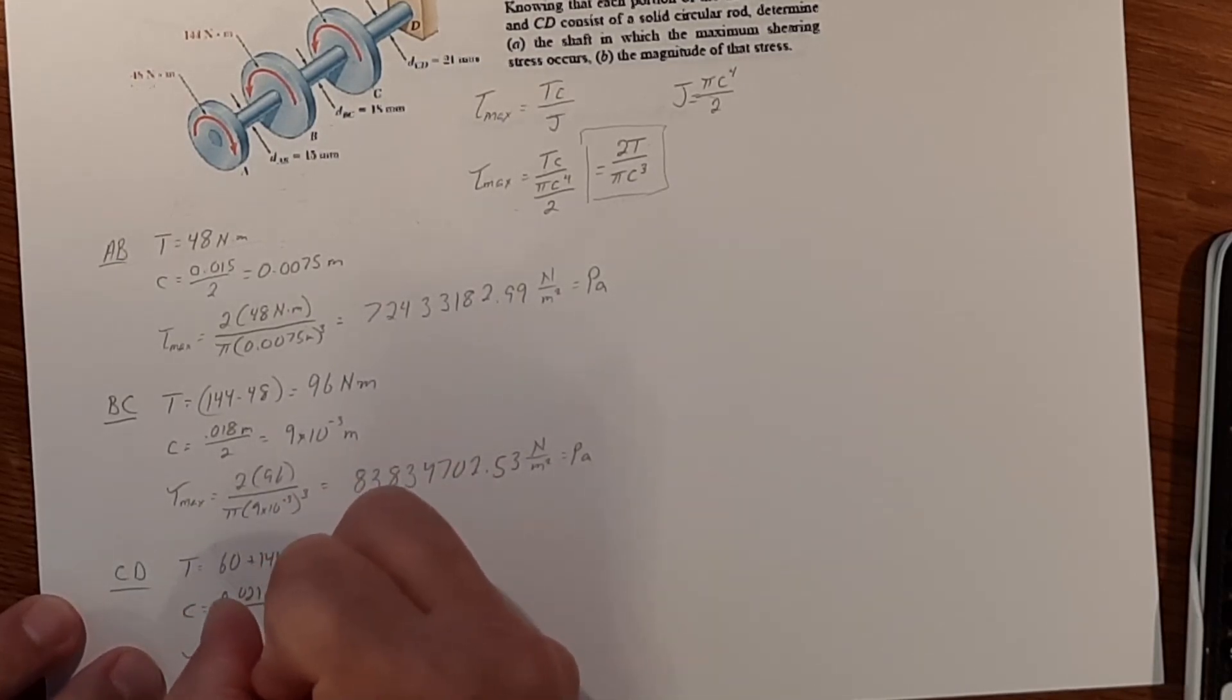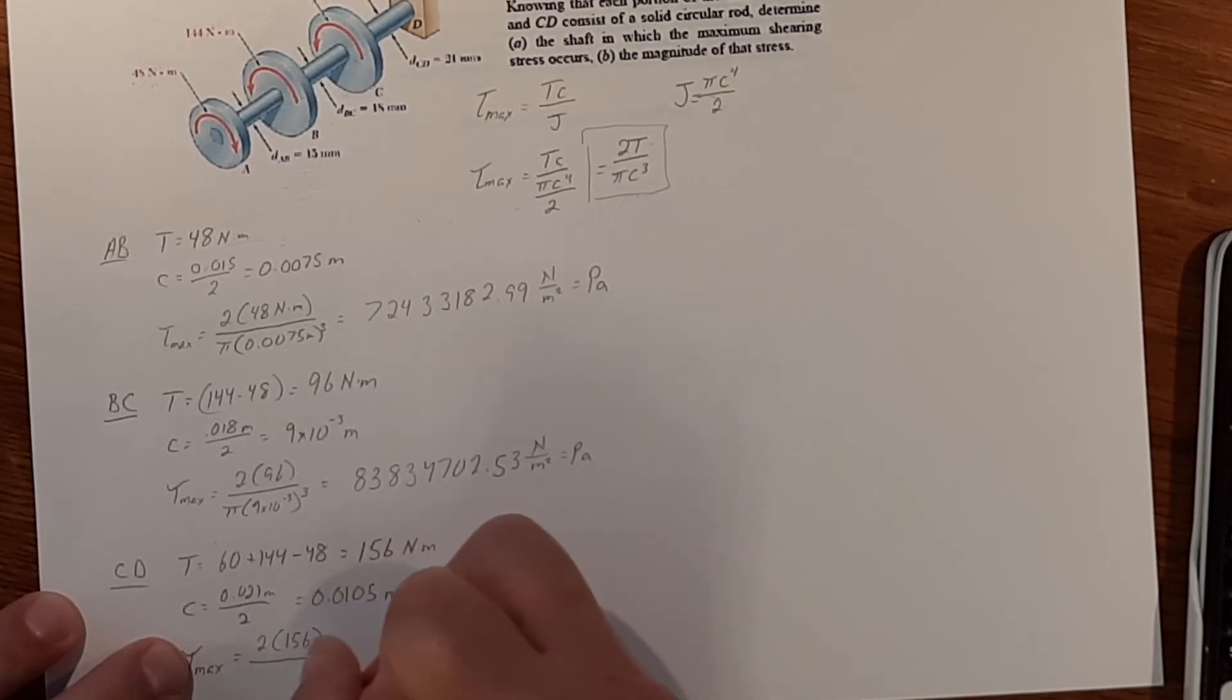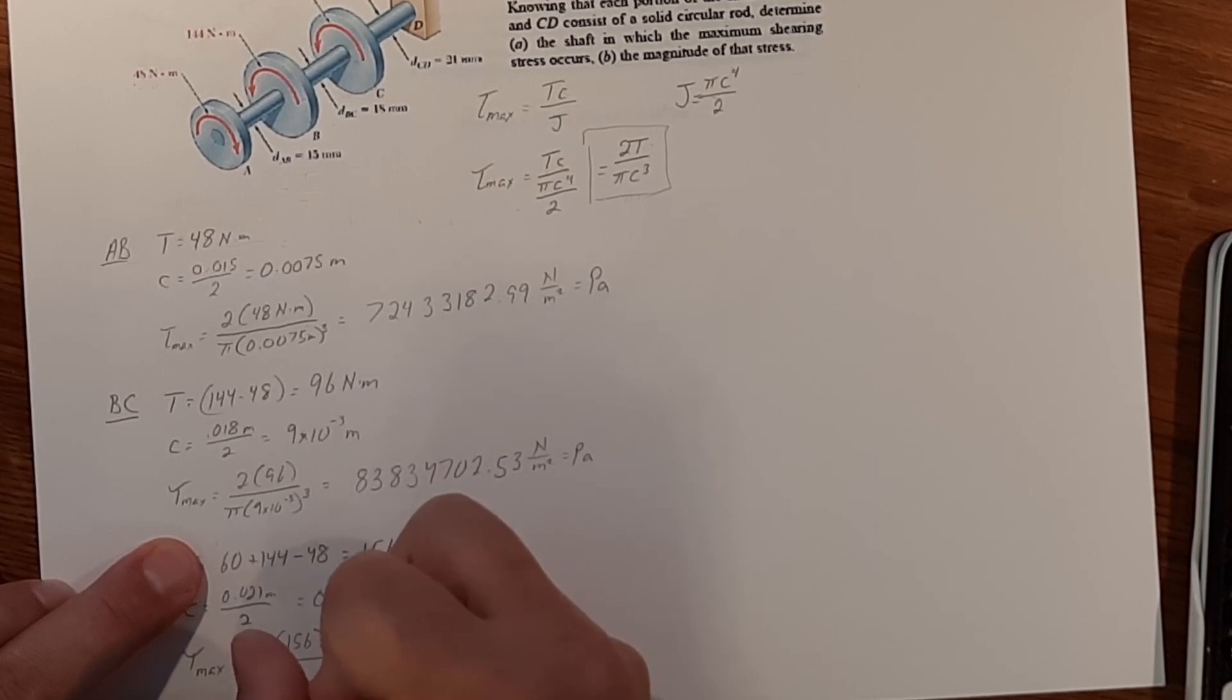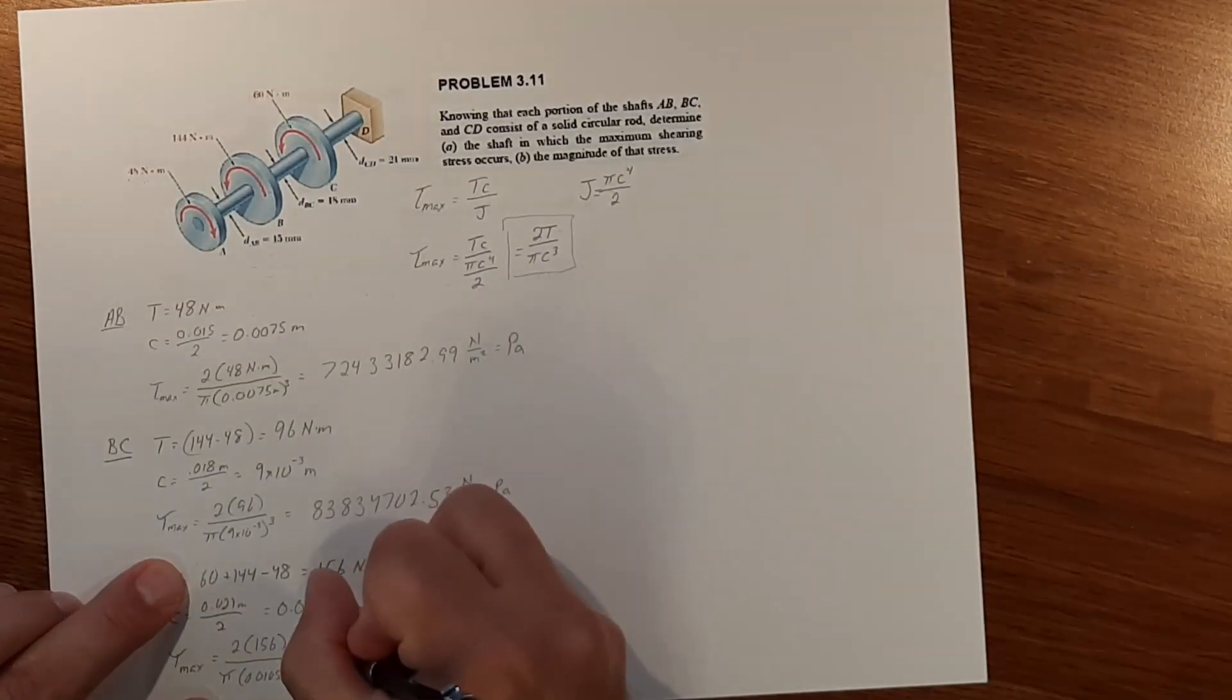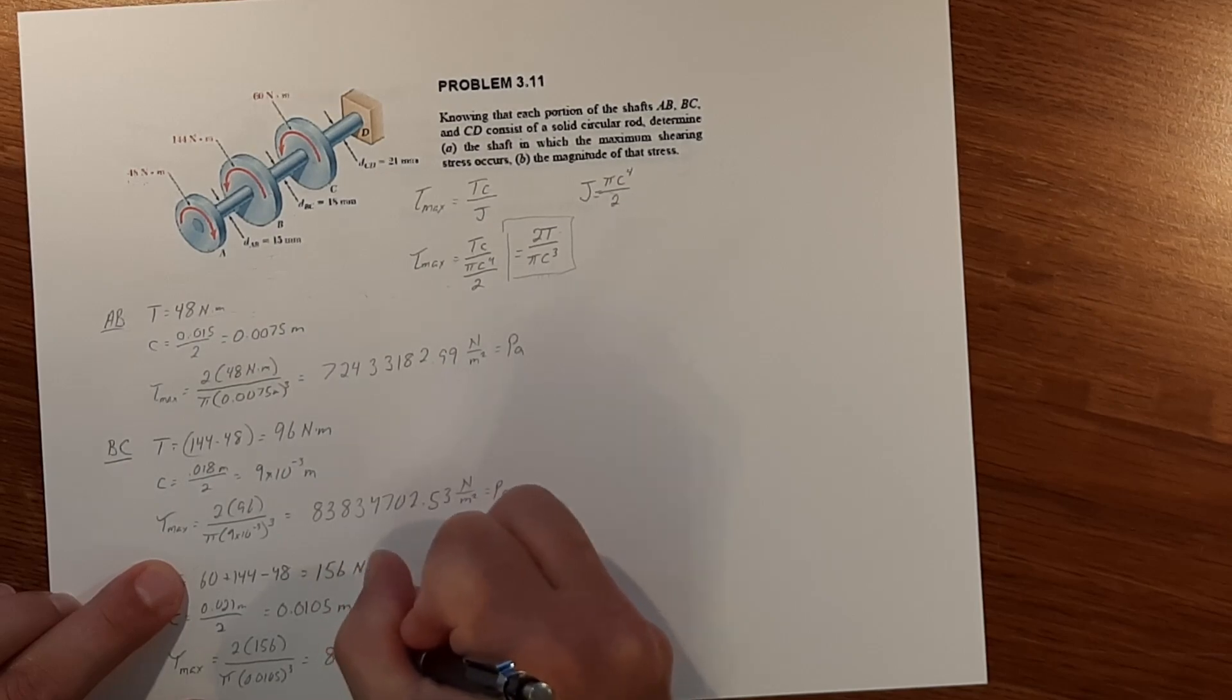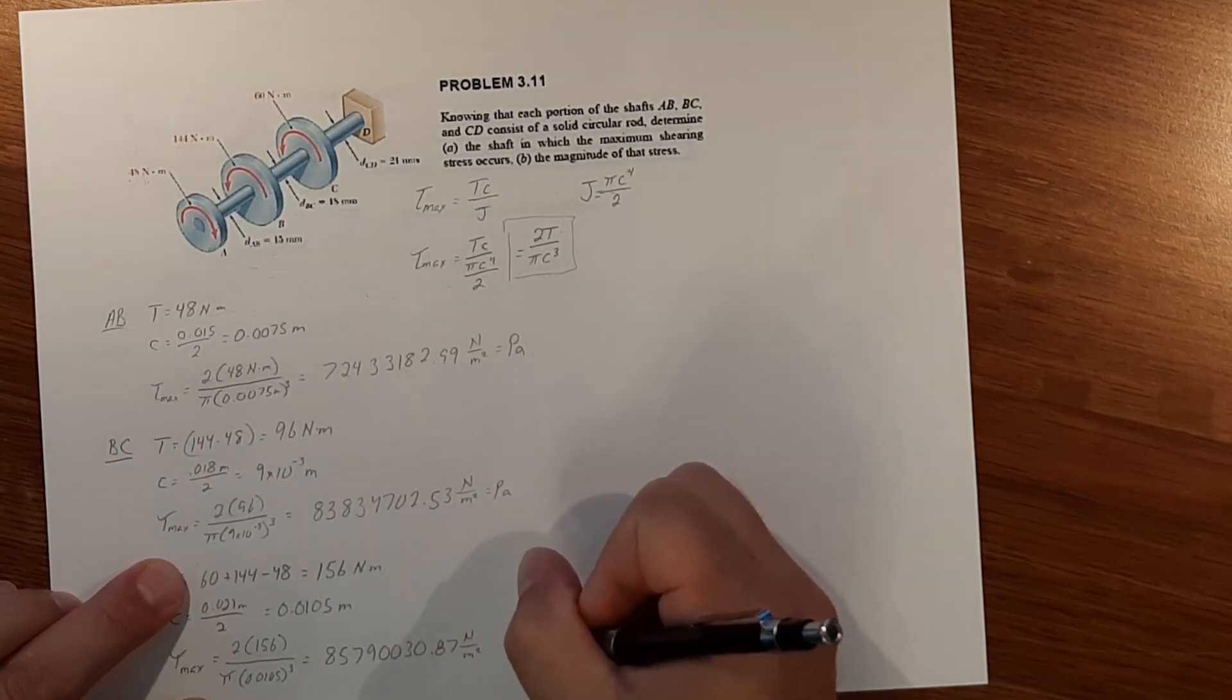So tau max is equal to 2 times torque 156 divided by pi times c 0.0105 cubed and that equals 85790030.87 Newton meters squared or pascals.